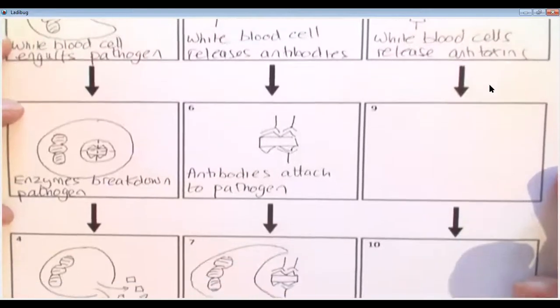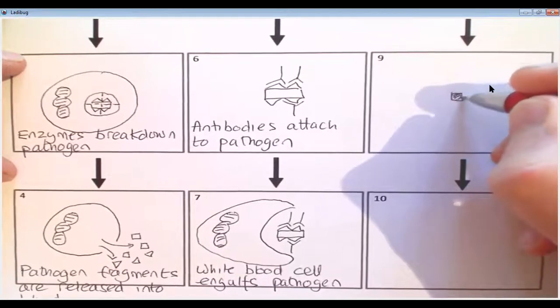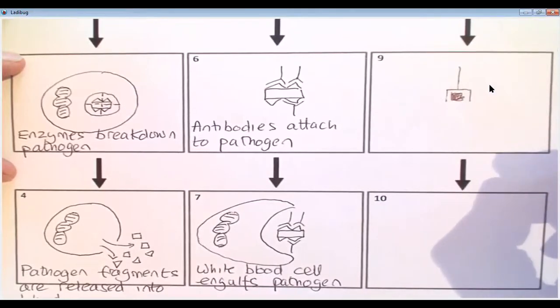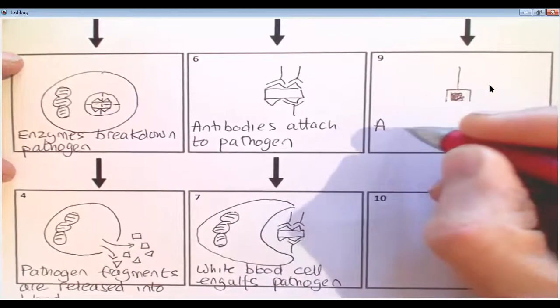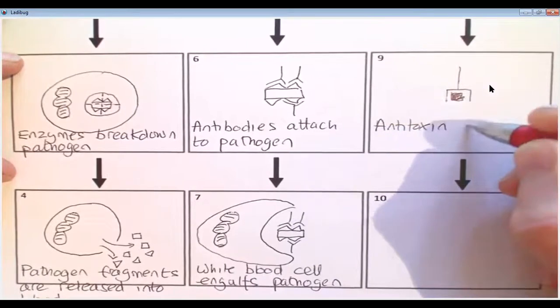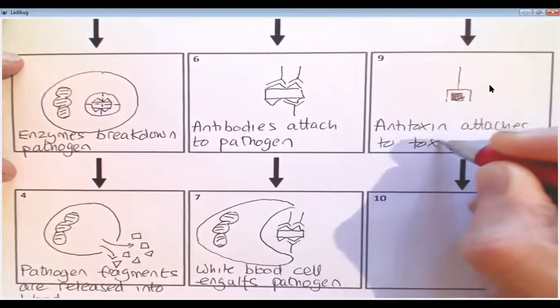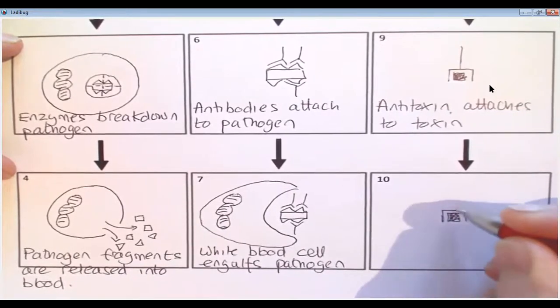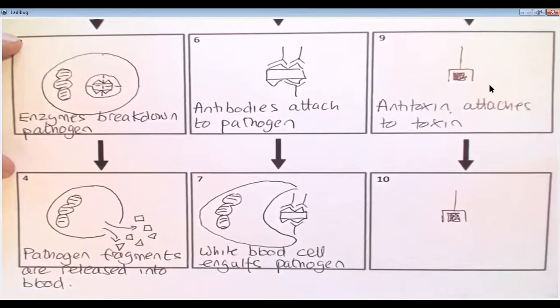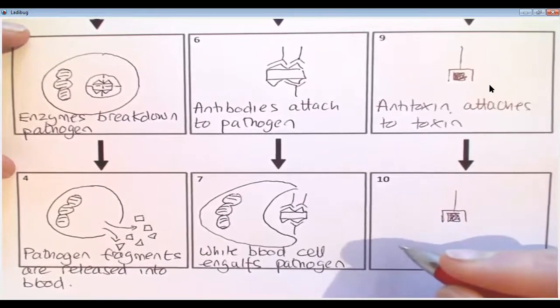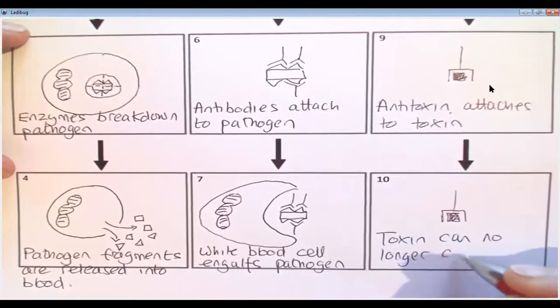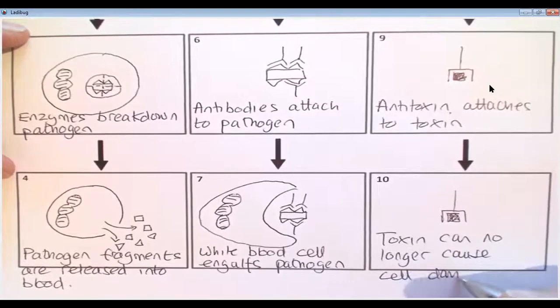And then you don't have to be a rocket scientist to look at what's about to happen. So we have got our toxin. And again, we have a complementary shape. The toxin fits inside the antitoxin. So here I'm going to write the antitoxin attaches to toxin. And really, that's pretty much the end of the process. But I've got one more thing to say. So I'm going to redraw this picture. And so when those two things are attached together, that toxin will no longer cause cell damage. So I'm going to write here. Toxin no longer cause cell damage.